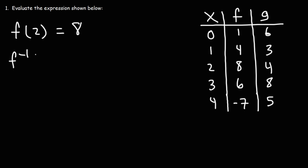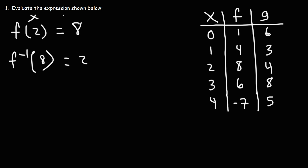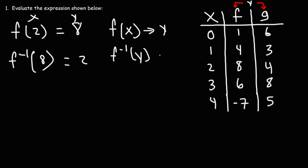Now what is the inverse of f of 8? The inverse of f of 8 gives us the x value, which is 2. It's simply the opposite. So when dealing with inverse functions, you need to reverse x and y. When you're evaluating a function like f, g, or h, you're looking for the y value — the value of f and g. When you're trying to find the inverse, the number inside is y, and it gives you x. If you're evaluating a regular function, you're looking for the y value.